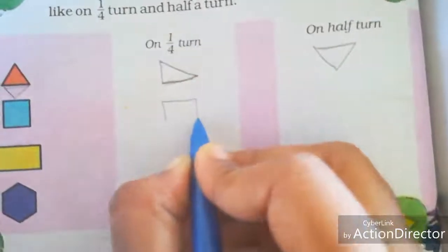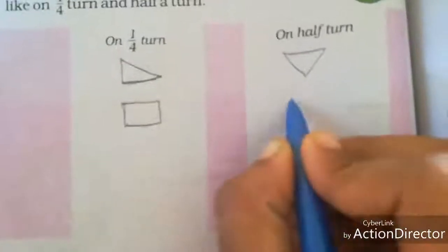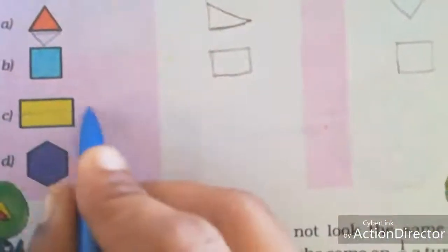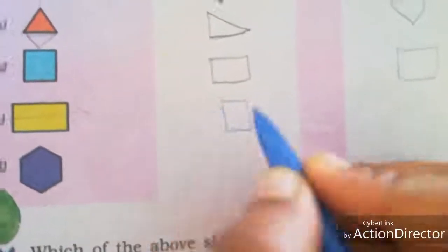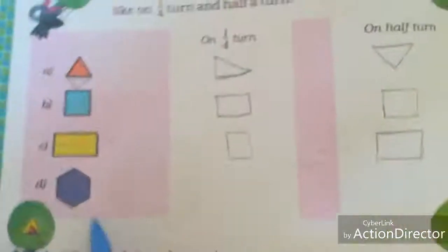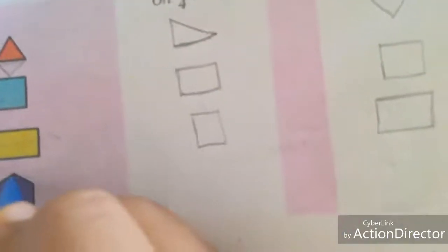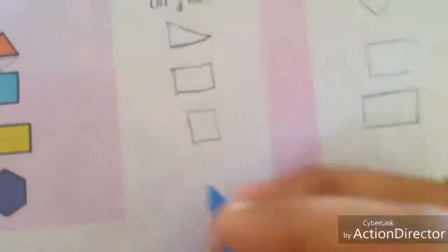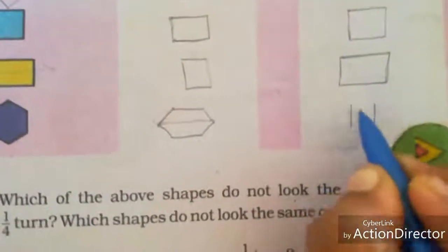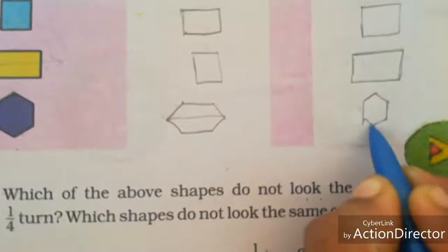For square it won't change — again it will become a square in all turns: quarter turn and half a turn. But for rectangle, the horizontal line will become a vertical line. Here again the vertical line will become a horizontal line. Next, hexagon — this vertical line will become a horizontal line, so the shape will look like this. The horizontal line will become again a vertical line.